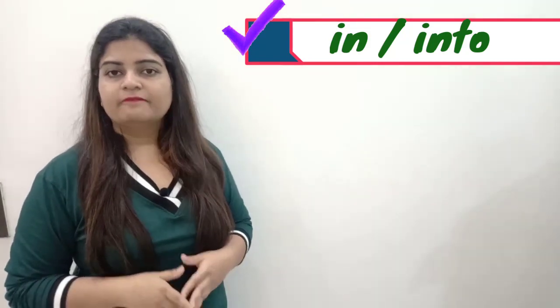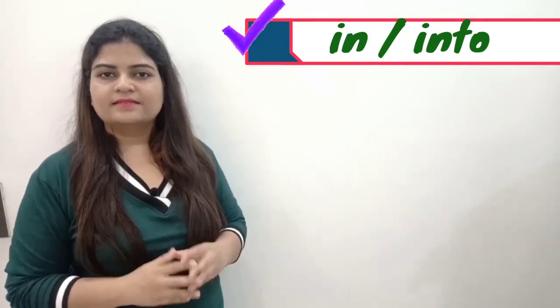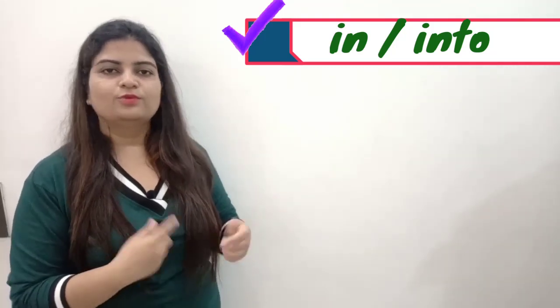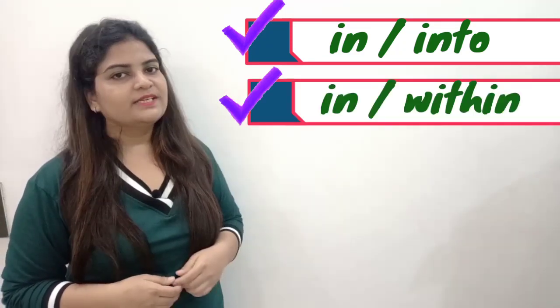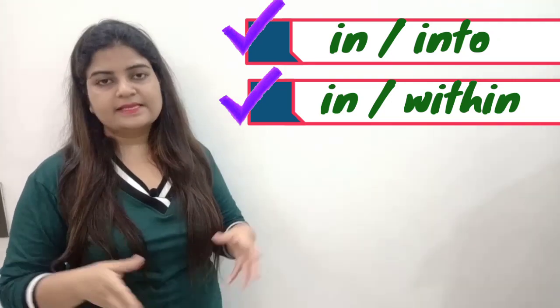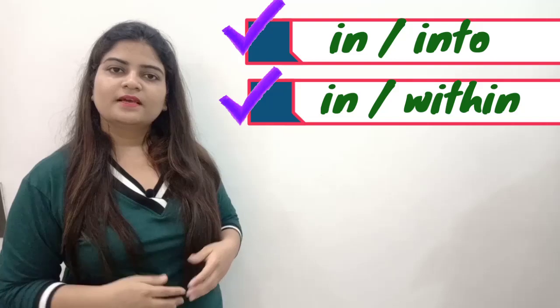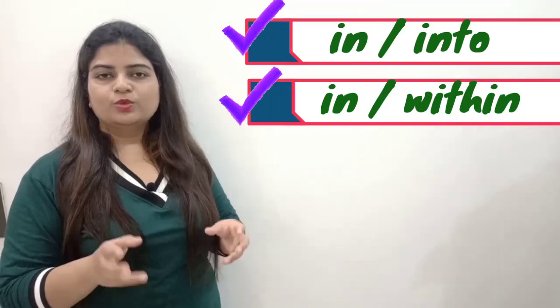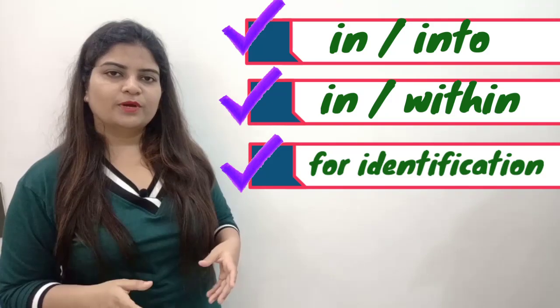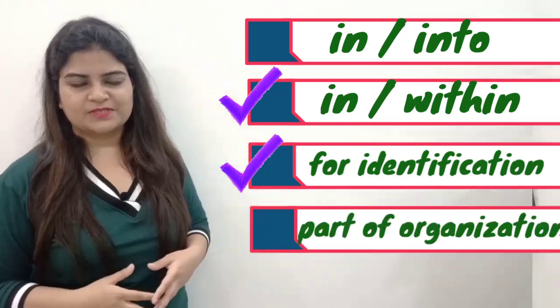Let's recapitulate the whole session. First, we use in for things already inside something, and into when there is motion from outside to inside. Second, in denotes an exact time period whereas within means it can take less time. Third, we use in for identification purposes. And lastly, in is used when someone is part of an organization. I believe you won't make any mistake while using these three prepositions.